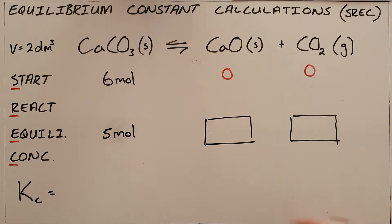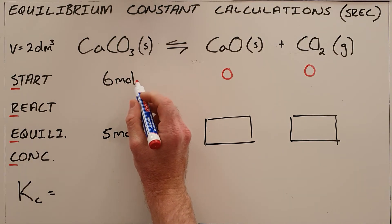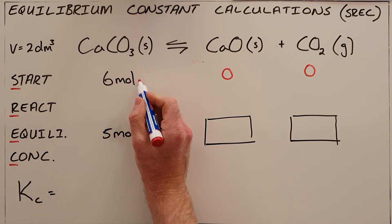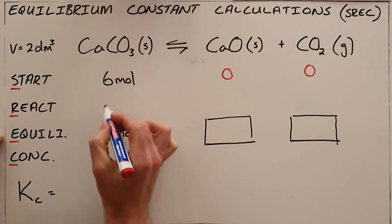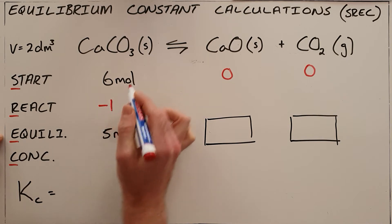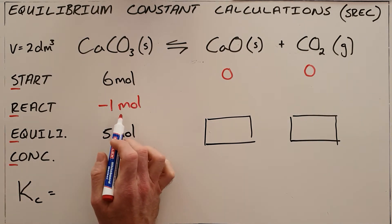So we start out by saying that if we started with 6 moles of calcium carbonate and ended, the equilibrium is essentially the end point here, ended with 5 moles, that means that we must have used up 1 mole of calcium carbonate in this reaction.